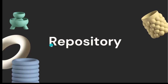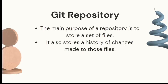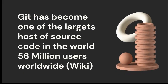An important term in Git is the repository. A repository is simply a collection — a place where you can store certain things. Its main purpose is to store a set of files. This could be your coding files, a tutorial, documentation, or any kind of file. Git also stores a history of changes made to those files — who made a commit, what changes were made, and who made them — which gives you version control.